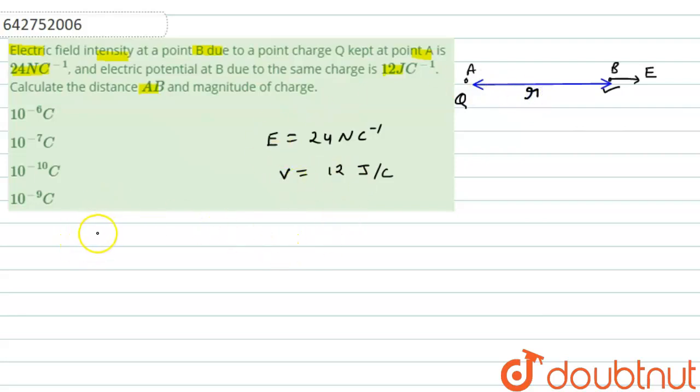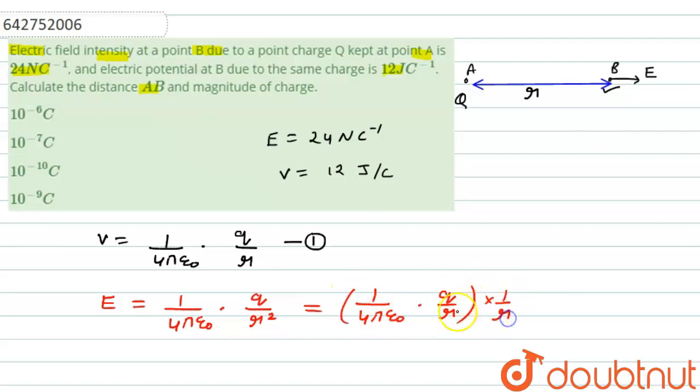Then we know that V equals 1 upon 4πε₀ Q by R. We can write E equals 1 upon 4πε₀ Q by R squared. So we can write E equals 1 upon 4πε₀ Q by R into 1 by R.